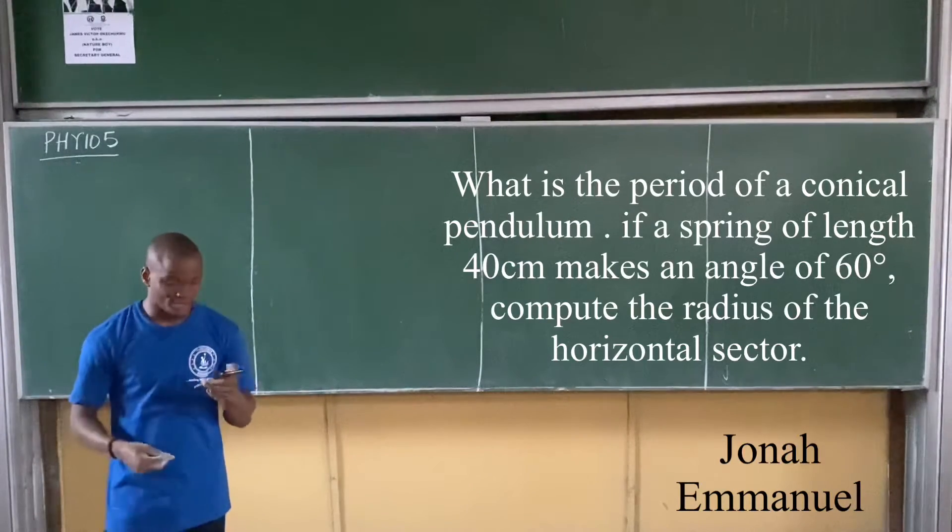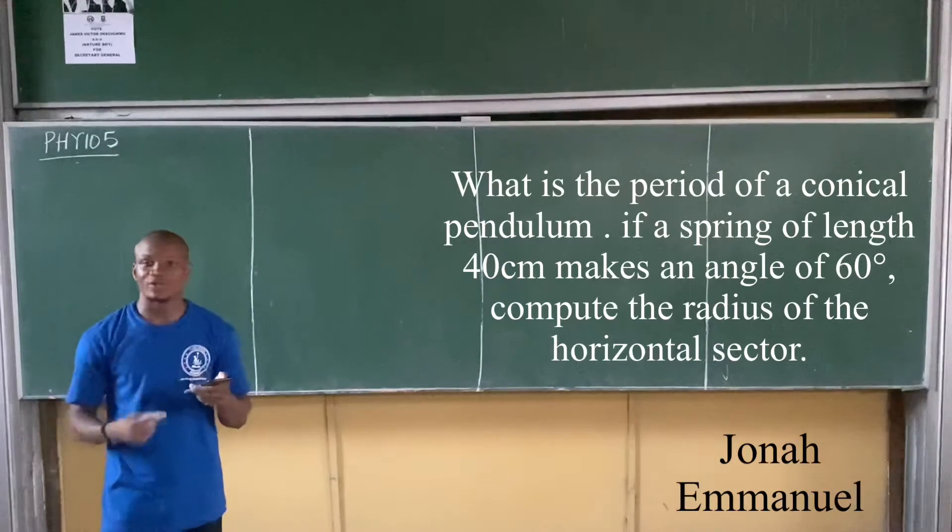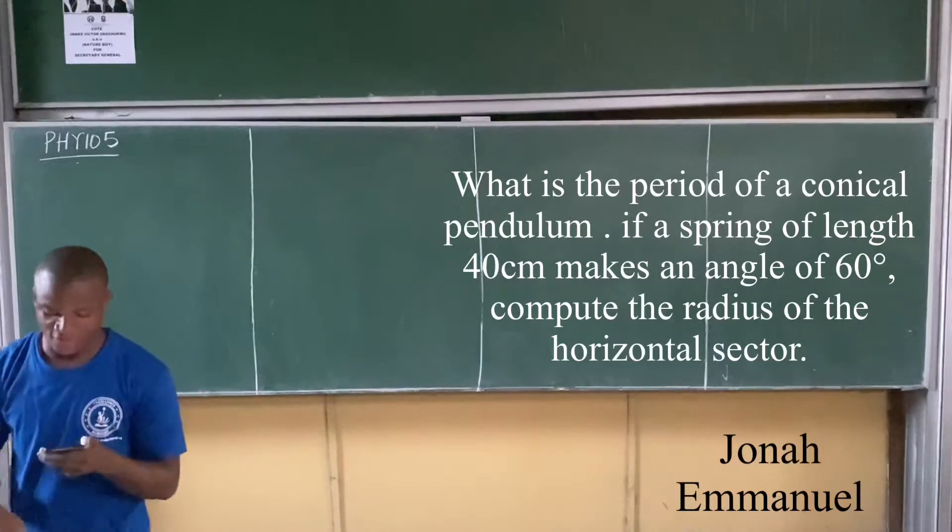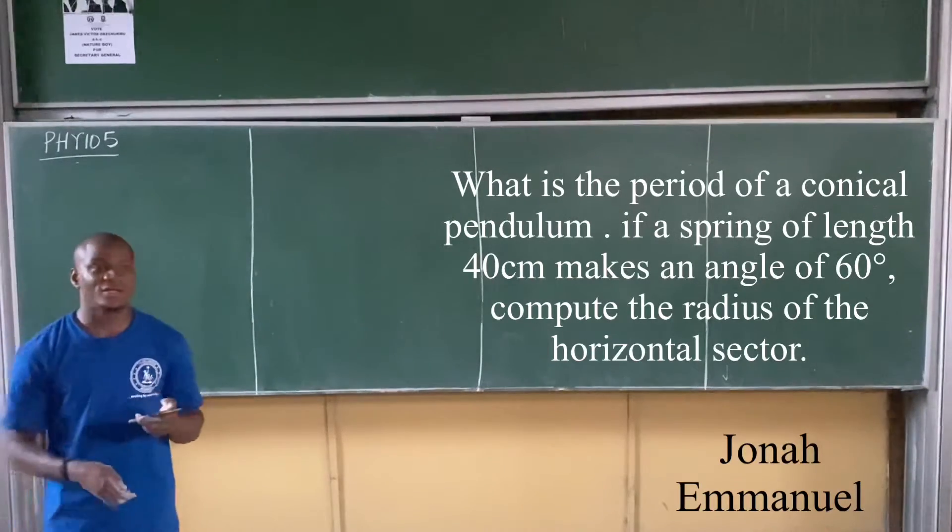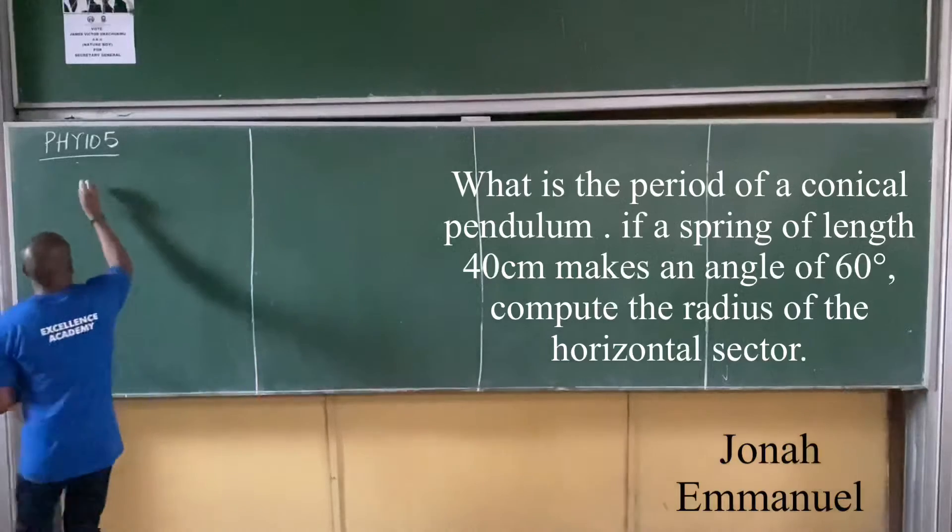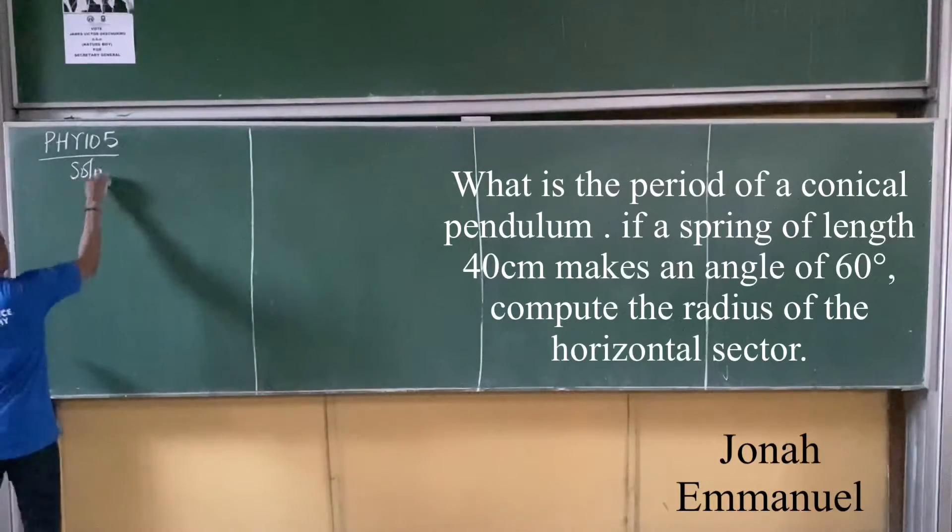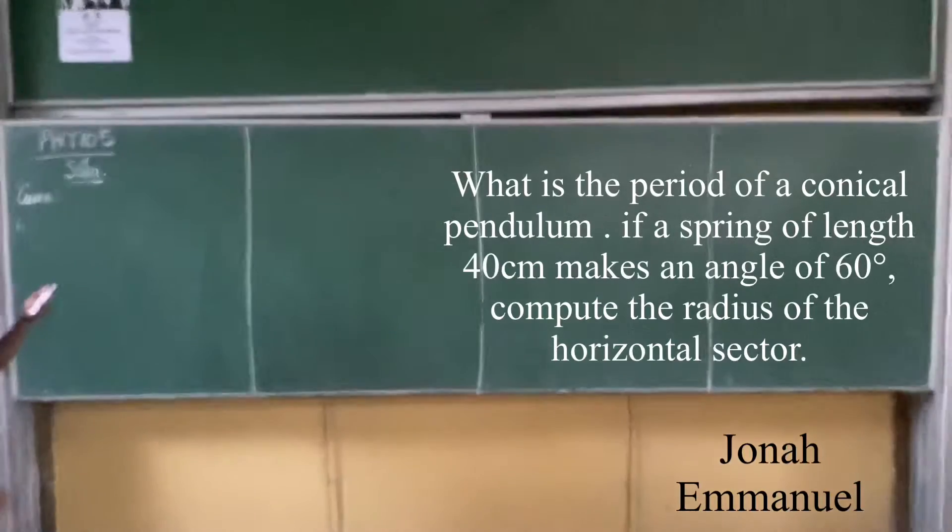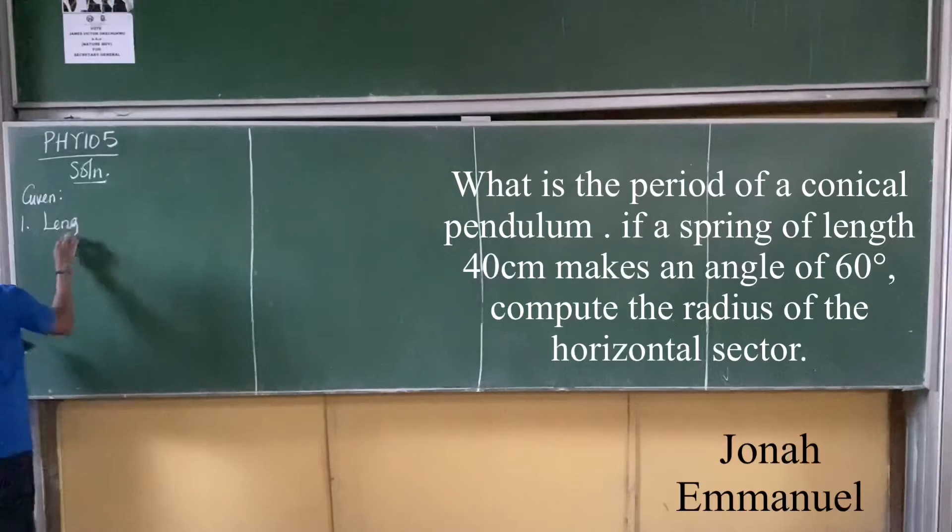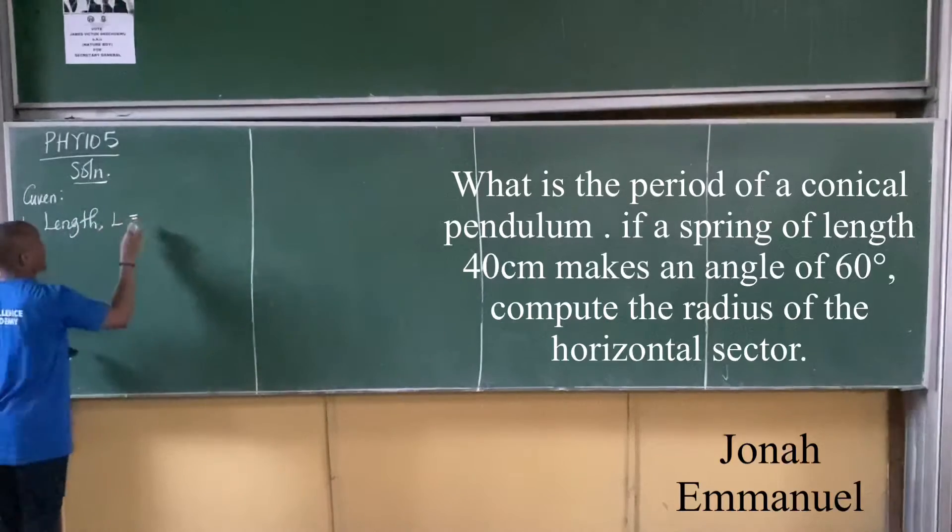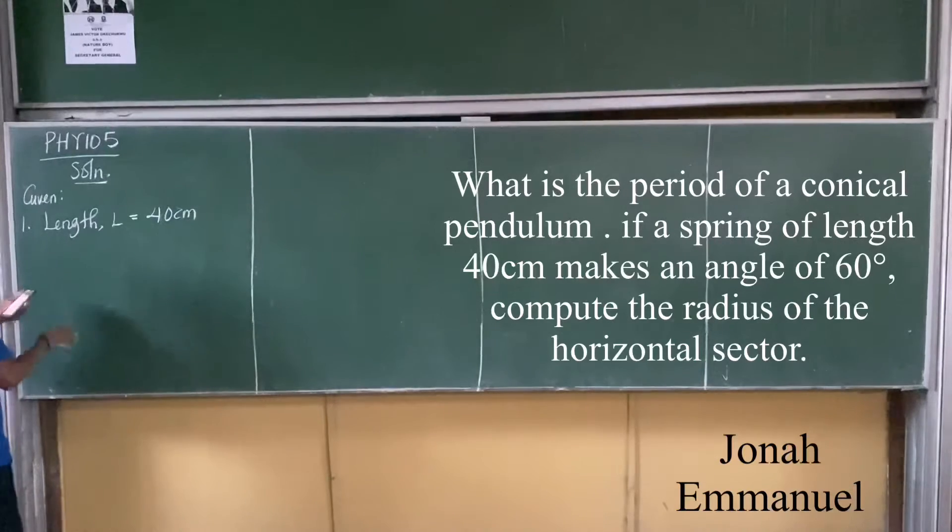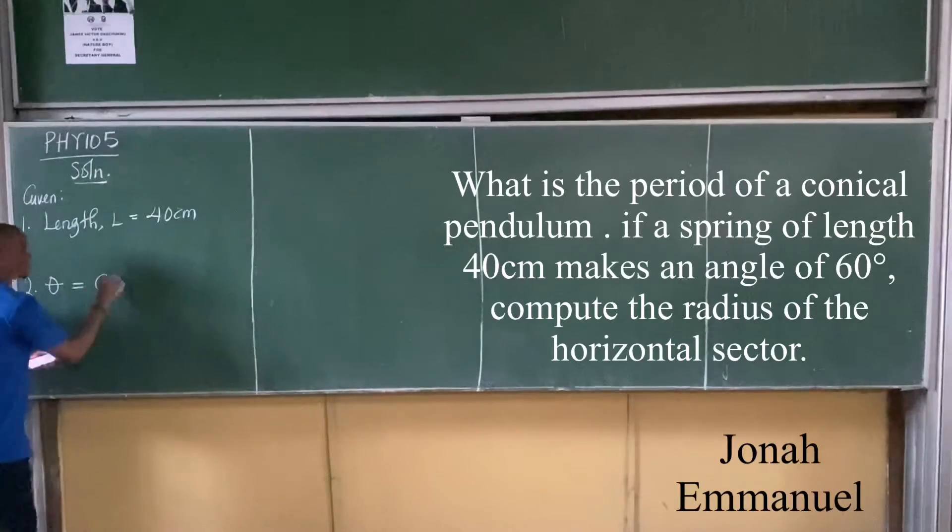Compute the radius of the horizontal sector. The solution is case 1. List the given parameters. The length L is given. How much? 40 cm. What angle am I given? Theta. How much? 60 degrees.